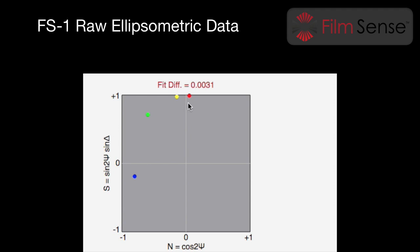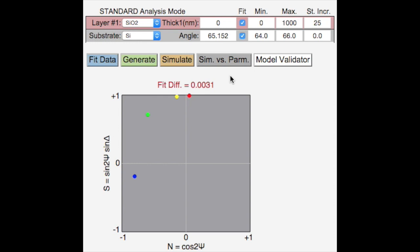To determine film thickness or optical constants, it is necessary to analyze the measured ellipsometric data set. An optical model is defined, corresponding to the structure of the sample.